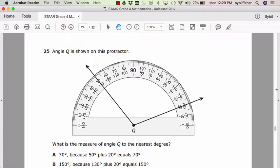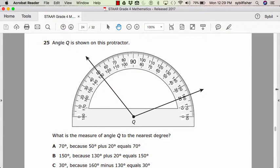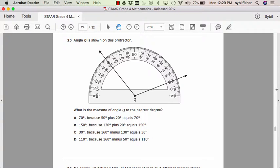Number twenty-five. Angle Q is shown on this protractor. What is the measure of angle Q to the nearest degree? A, seventy, because fifty plus twenty equals seventy. Or B, one-hundred-and-fifty degrees, because one-hundred-and-thirty degrees plus twenty degrees equals one-hundred-and-fifty degrees. Or C, thirty degrees, because one-hundred-and-sixty minus one-hundred-and-thirty degrees equals thirty degrees. Or D, one-hundred-and-ten degrees, because one-hundred-and-sixty minus fifty equals one-hundred-and-ten.